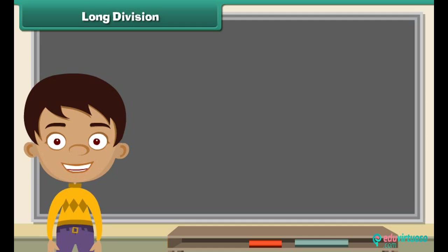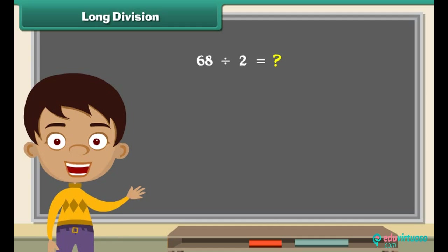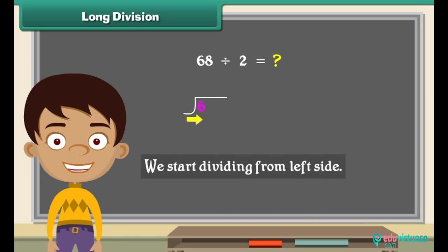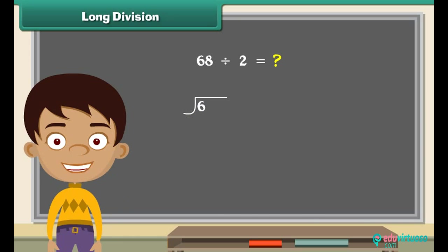We will now divide sixty-eight by two using the long division method. For this we write sixty-eight divided by two as shown on screen. Look at the first number from the left side in sixty-eight — it is six. We start dividing from the left side. First we will divide six by two: six divided by two is three. So we put that three right above the six.